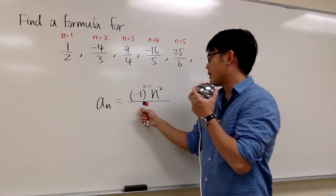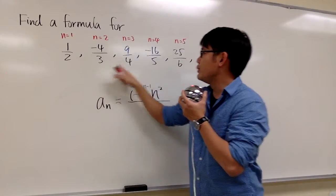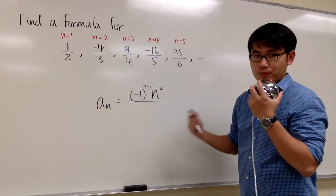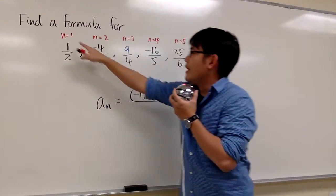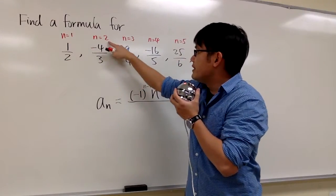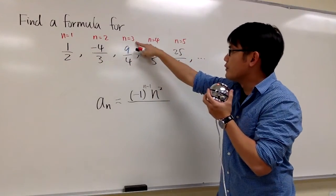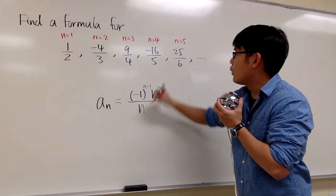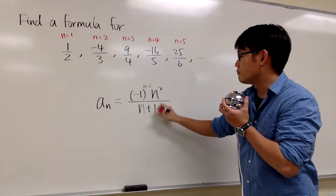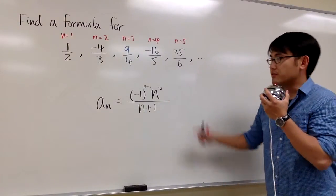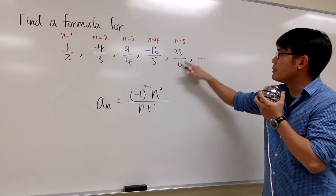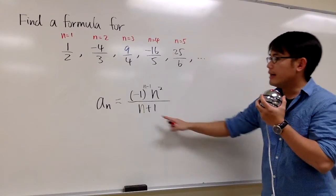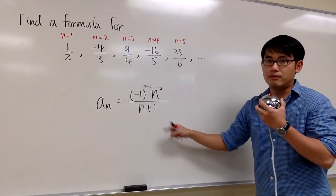Now the bottom. We have 2, 3, 4, 5, 6. What happens? When n equals 1, we get 2. When n equals 2, we get 3. When n equals 3, we get 4. On the bottom, it's just n, whatever the n value is, and then you just add 1 to it. For example, on the fifth term to get the bottom, we know n equals 5, so we just add 1. That's it.